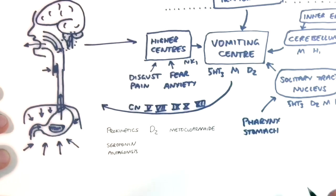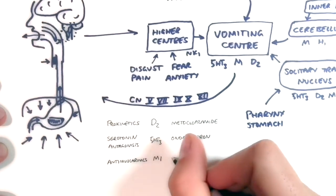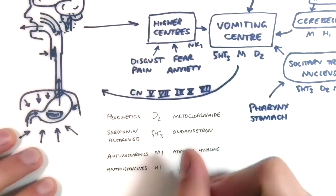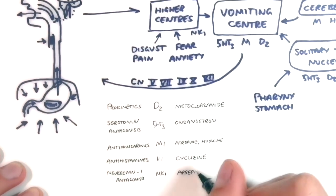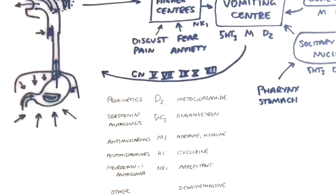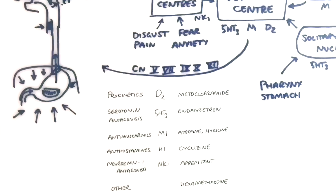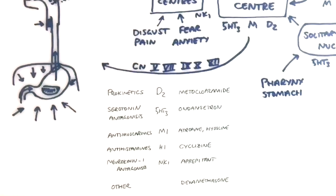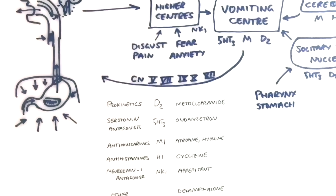It also makes sense why it is claimed that the antihistamines are best for preventing motion sickness, and why metoclopramide is used to help the sickness caused by gastric stasis in migraine. The steroids also have an antiemetic effect, which is largely poorly understood, but it might be through artificially increasing appetite. And there you have it — the vomiting reflex and the common drugs that we use to treat it.